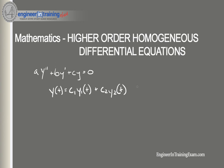This is the general solution that we are going to work towards when solving higher-order homogeneous differential equations. Determining the form of y1 and y2(t) can be done by first putting the differential equation into what's known as the characteristic equation, which is done simply by adding an r variable in place of the y variables.